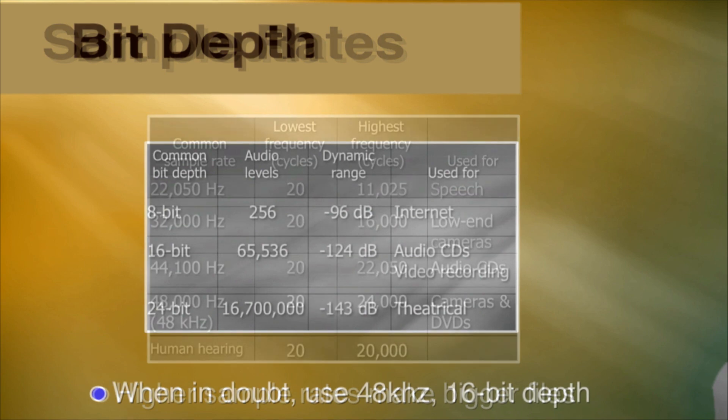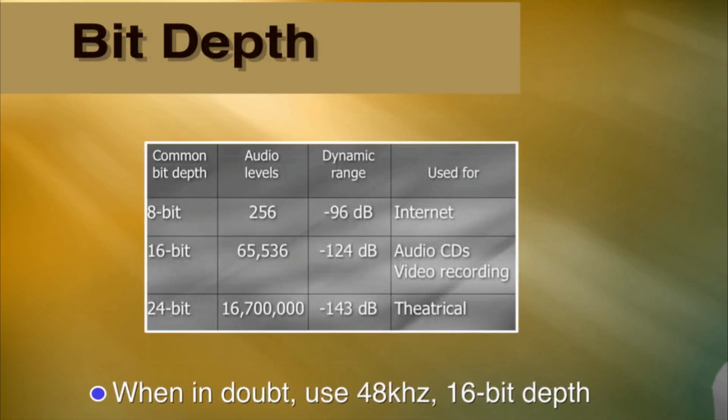Now let's talk about bit depth. There are three common bit depths: 8, 16, and 24. Bit depth tells us how many steps are between the softest and loudest point of the clip. 8-bit has 256 steps, 16-bit has 65,000 steps, and 24-bit has over 16 million steps. 24-bit is usually used in the theatrical setting, 16-bit for audio CDs and video, and 8-bit is usually for the internet. So when in doubt, use 48 kHz, 16-bit depth.